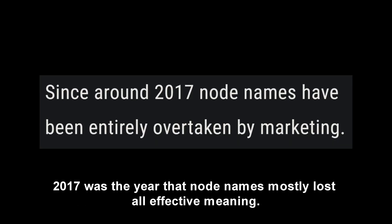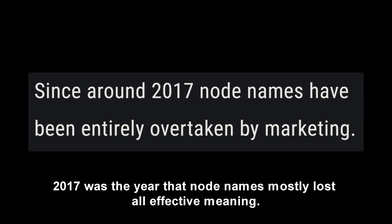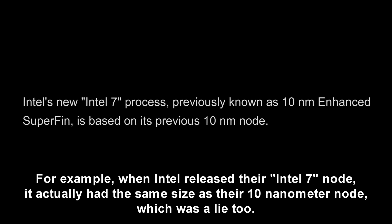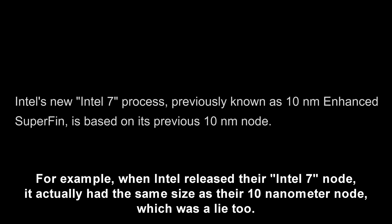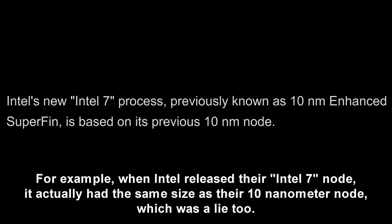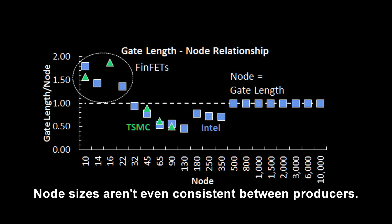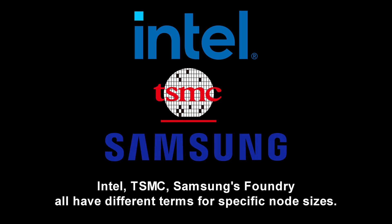2017 was the year that node names mostly lost all effective meaning. For example, when Intel released their Intel 7 node, it actually had the same size as their 10 nanometer node — which was a lie too. This trend from Intel still continues. Node sizes aren't even consistent between producers: Intel, TSMC, and Samsung's Foundry all have different terms for specific node sizes.